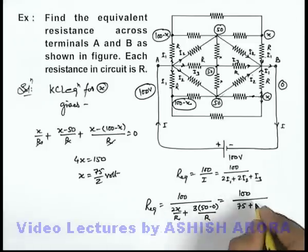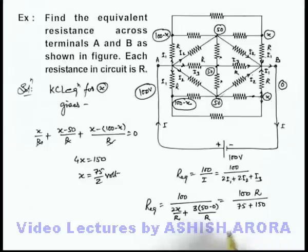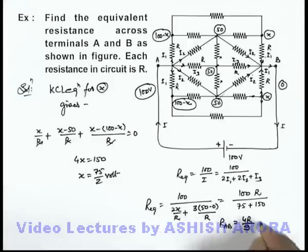Plus this will be 3 into 50 is 150, and R we can take in numerator. So this will be hundred upon 225 R, that can be written as R_AB. In this situation finally we are getting as 4R by 9 - that will be the answer to this problem.